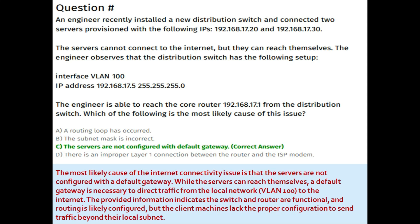The servers are not configured with a default gateway. The most likely cause of the internet connectivity issue is the missing default gateway. While the servers can reach themselves, a default gateway is necessary to direct traffic from the local network VLAN 100 to the internet. The switch and router are functional and routing is likely configured, but the client machines lack the proper configuration to send traffic beyond their local subnet.